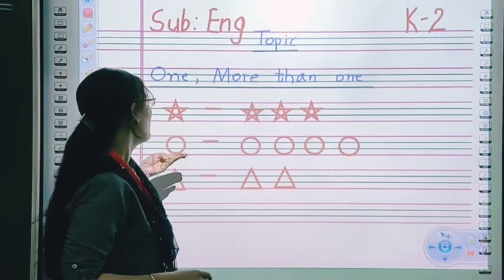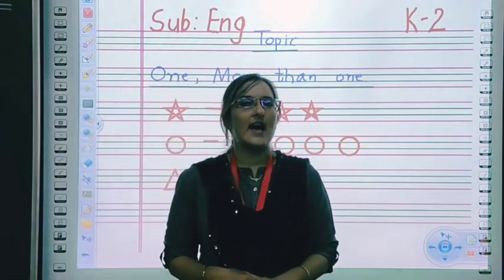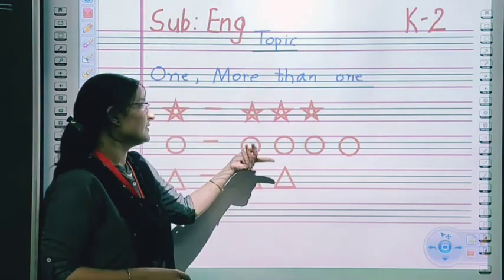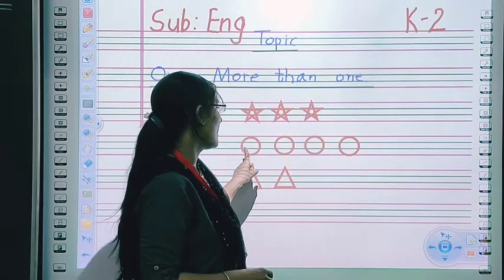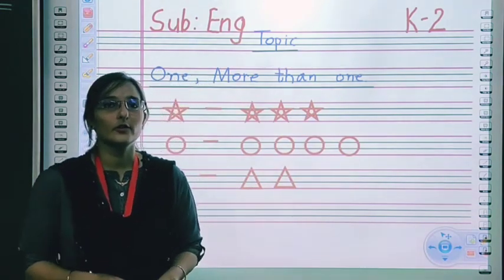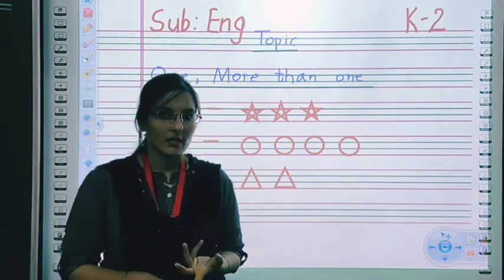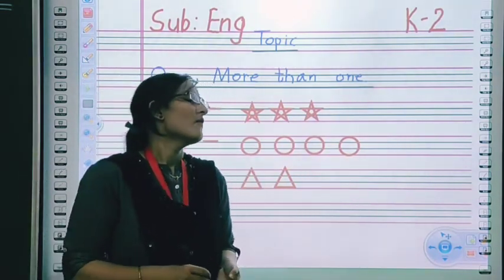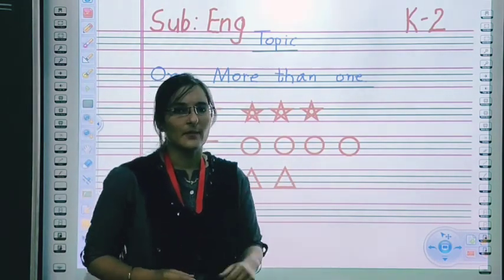Next, what's drawn over here? Circle. Spelling of circle is C-I-R-C-L-E. On this side, how many circles are there? Four. One, two, three, four. So we will add S in the spelling. If we are talking about more than one object or thing, we have to add S in the spelling. The spelling will become C-I-R-C-L-E-S.